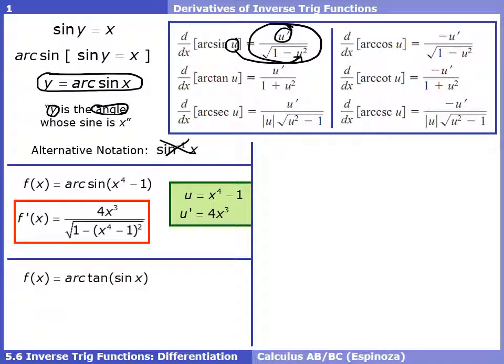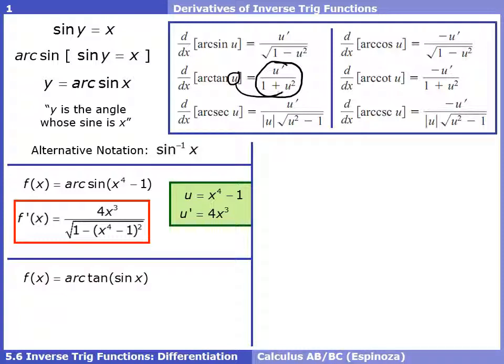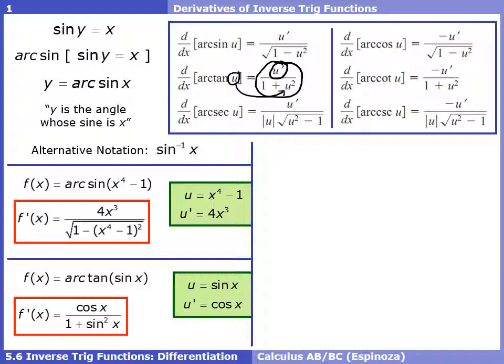To take the derivative of arc tan of sine, we use this formula. Just like the previous one, once you identify what u is, it's a matter of plugging that into the formula and putting u prime in the top. u in this case is sine of x. On the bottom of the fraction, it's one plus u squared, or one plus sine squared. On top, we put u prime, which is cosine of x.